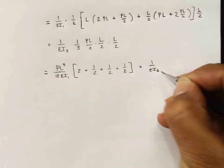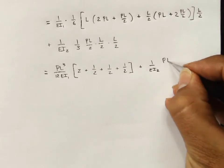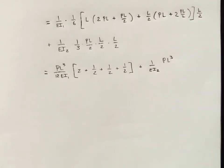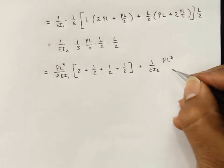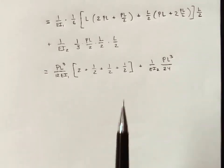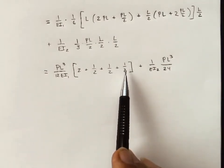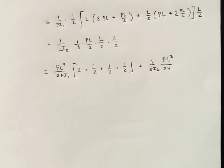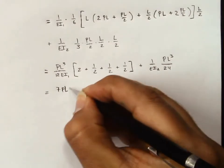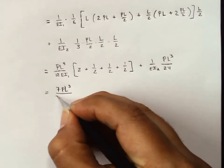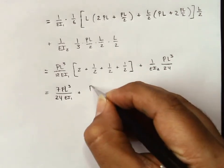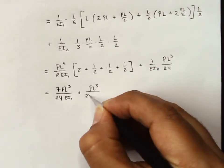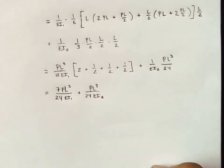Add in the second term, 1 over EI 2. PL cubed from the top. 3 times 2 is 6, times 2 is 12, times 2 is 24. This is 3 and a half, or 7 halves. The 2 in the denominator multiplies to give us 24 there. So this is equal to 7 PL cubed over 24 EI 1 plus PL cubed over 24 EI 2. This actually is our answer.